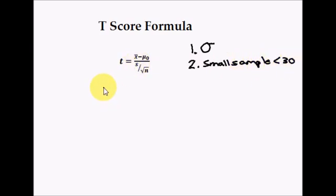Here's our T-score formula, we've got x-bar, that's the sample mean. Mu sub-zero, that's the population mean.